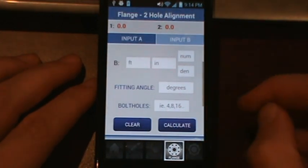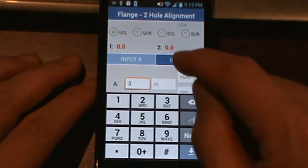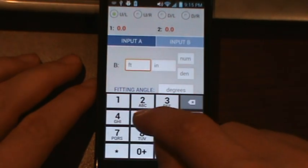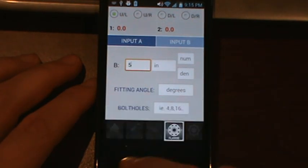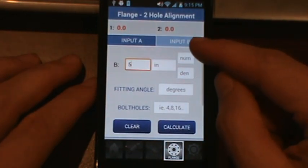If we input let's say three feet for A and we'll do five feet for B just as a quick calculation. If you enter A and B you don't need the fitting angle.